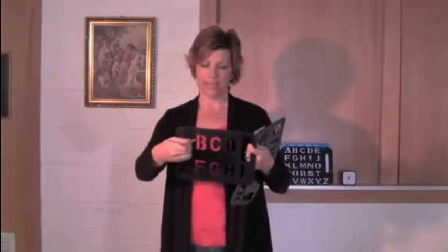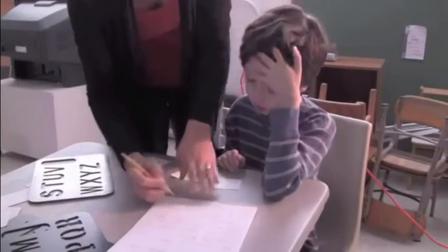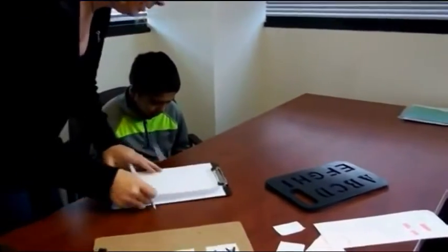And the stencils are broken down because giving them a full stencil board with A through Z on it is too overwhelming at first. So we break them down. It's easier. And it's good that they can poke through to get some feedback. Like, okay, I'm on the D. They can feel that. Then sky is B, L, U, E, blue.